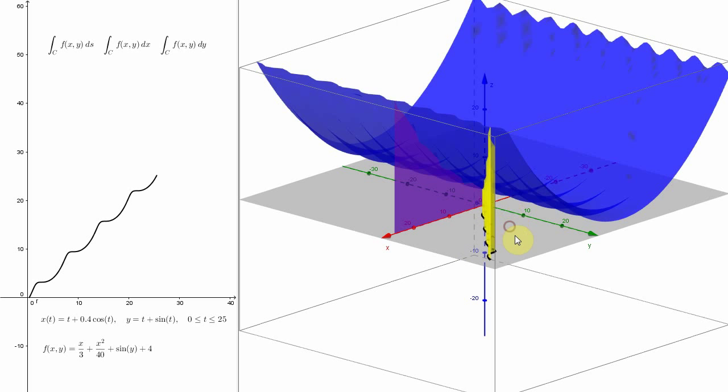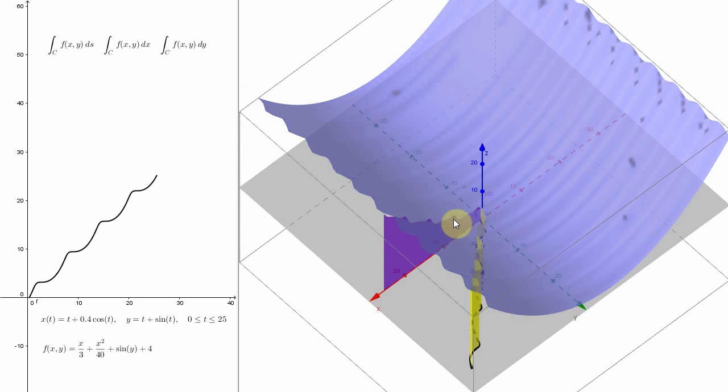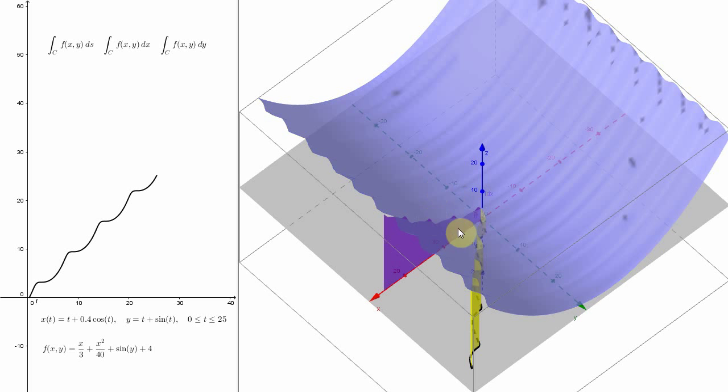And I think from above you can actually see even better. You see how the purple flat plate kind of juts above the blue surface, the blue graph of the function f just a little bit.